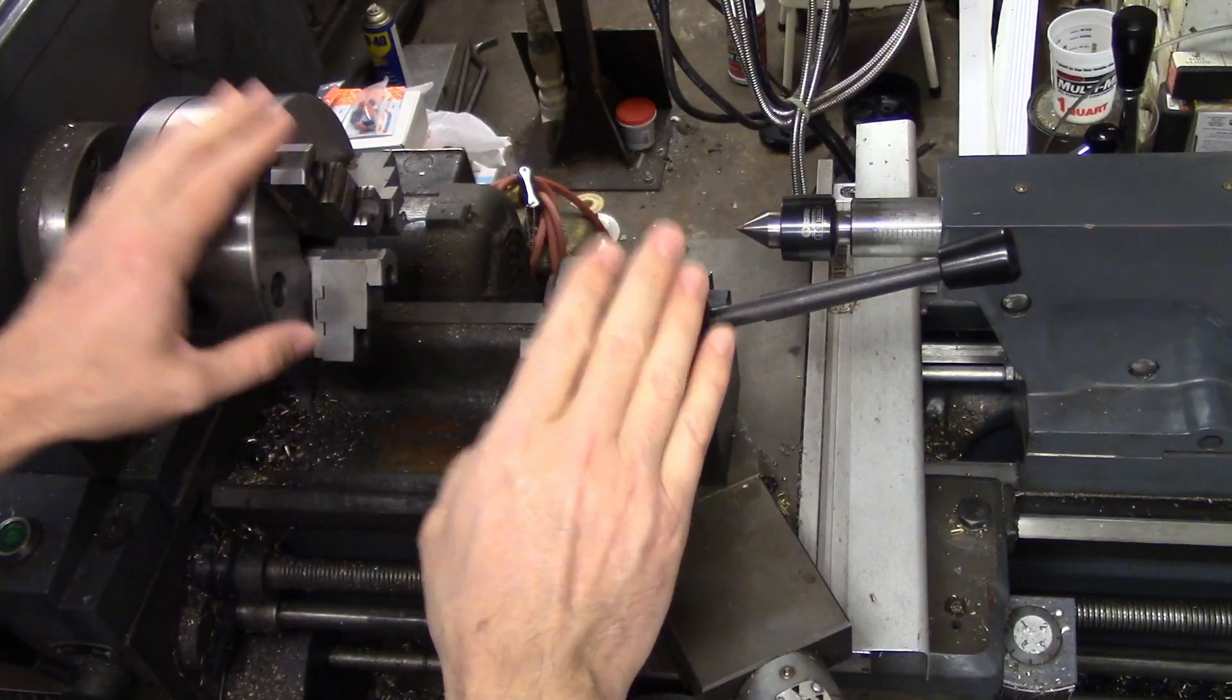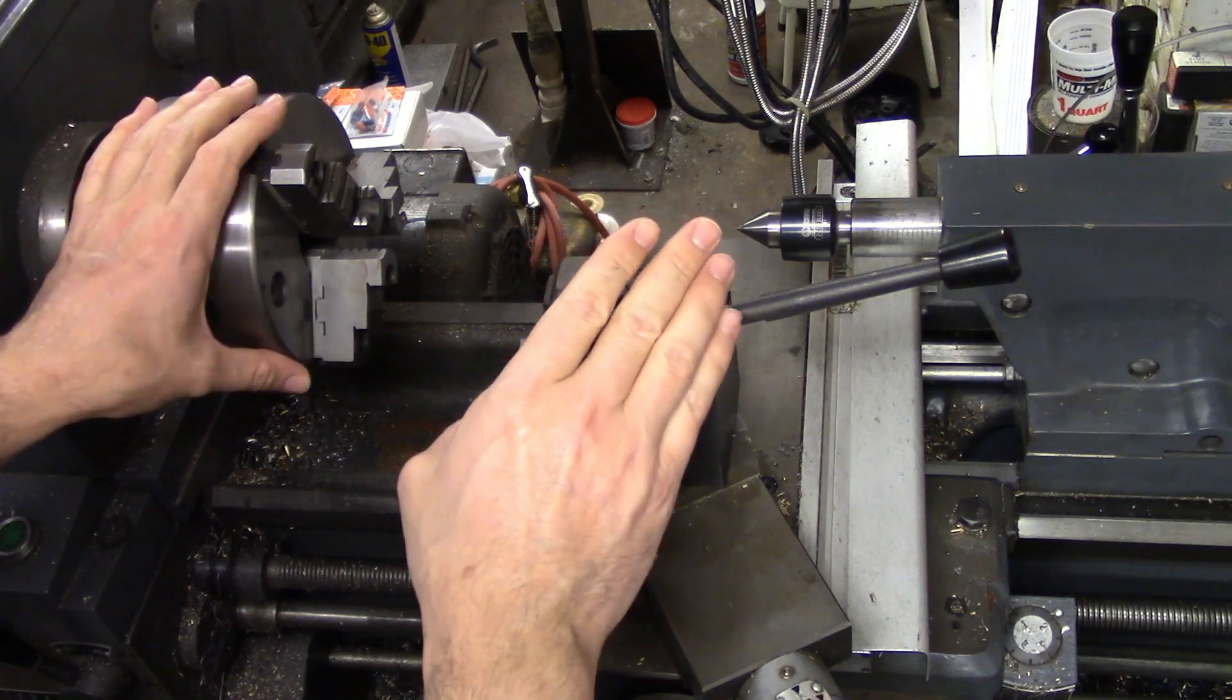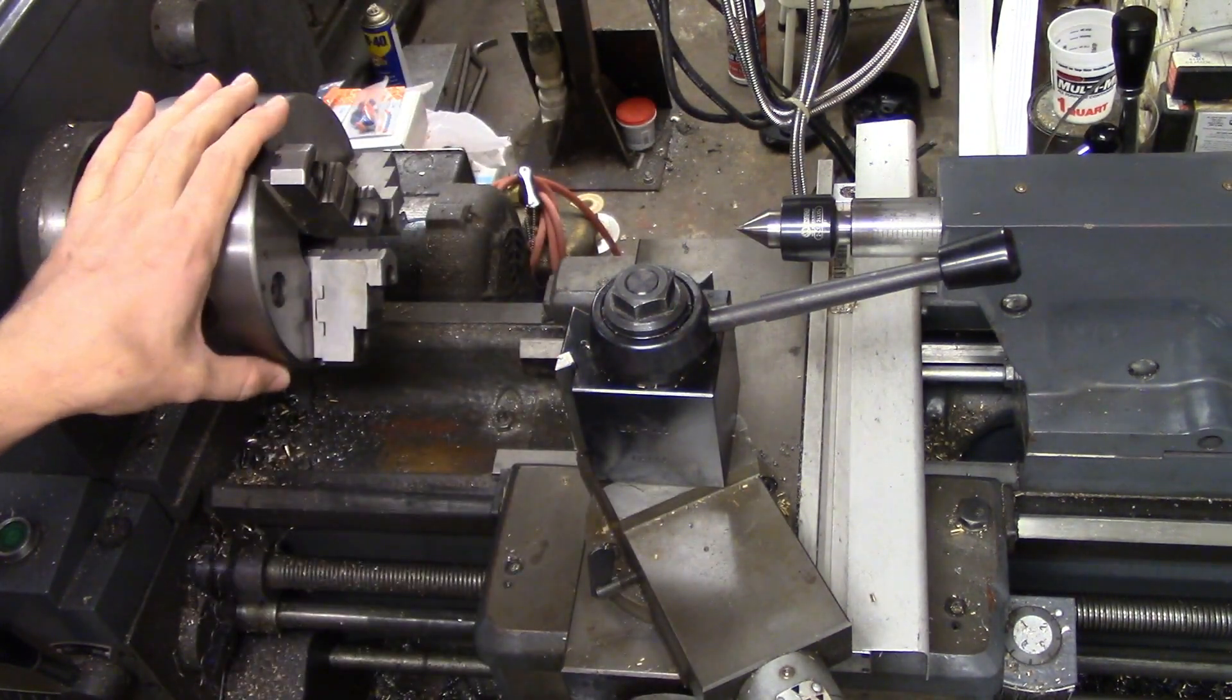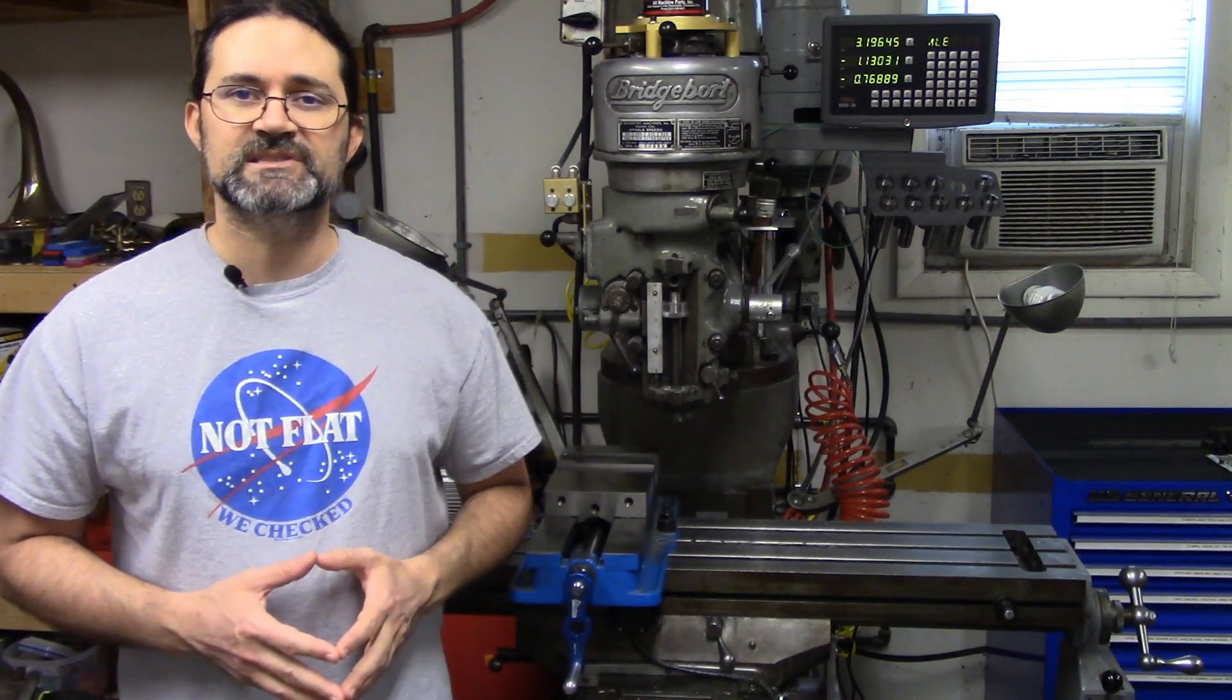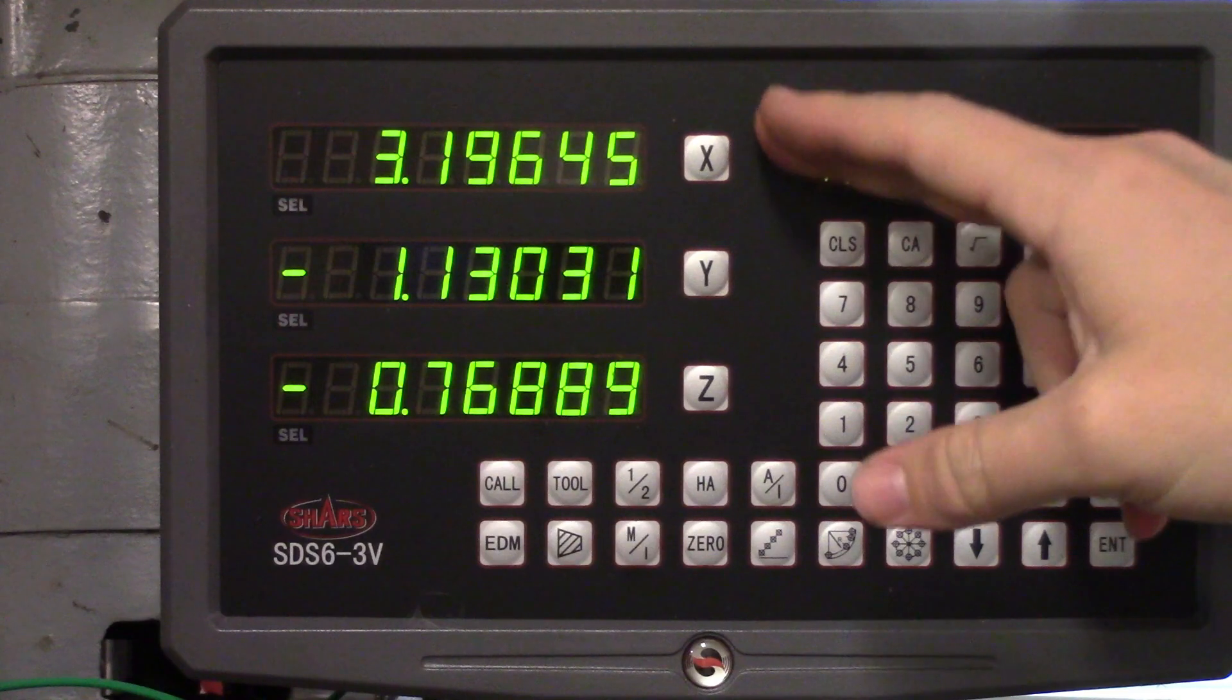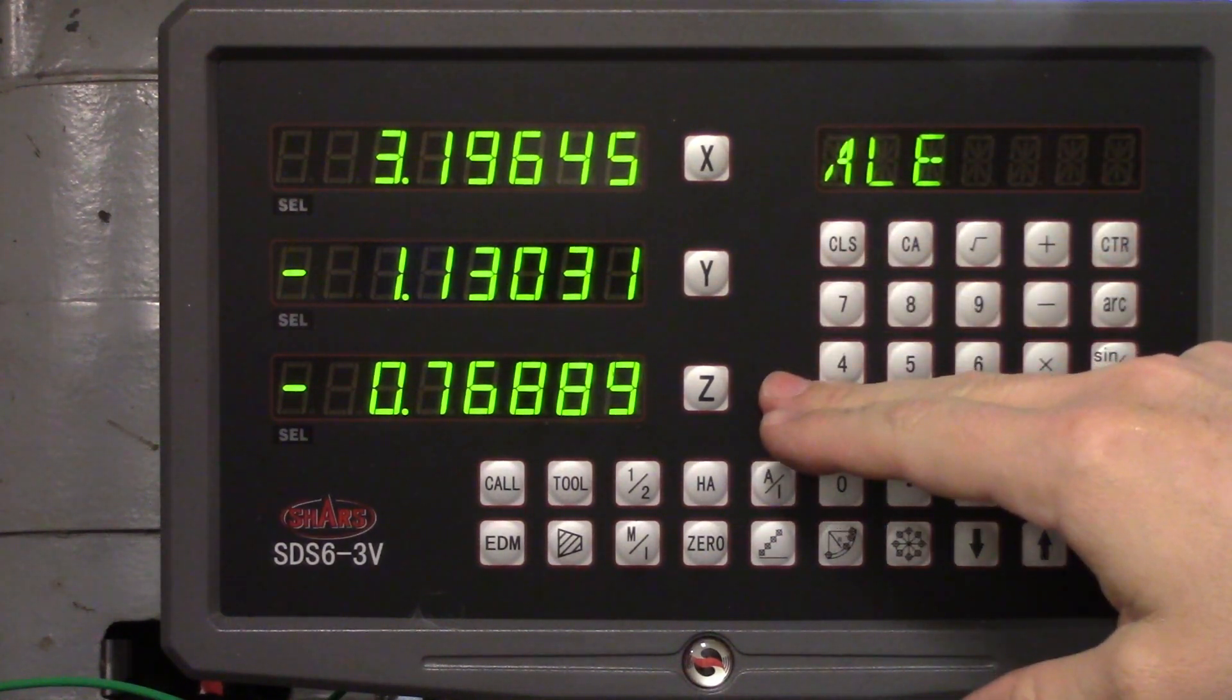Each axis is given a name as well. On the milling machine it will be X, Y, and Z. For the lathe it's just X and Z because there is no up and down axis of motion. These names are used on CNC machines to differentiate between the axes in the program, and they're also used on the digital readouts on manual machines.